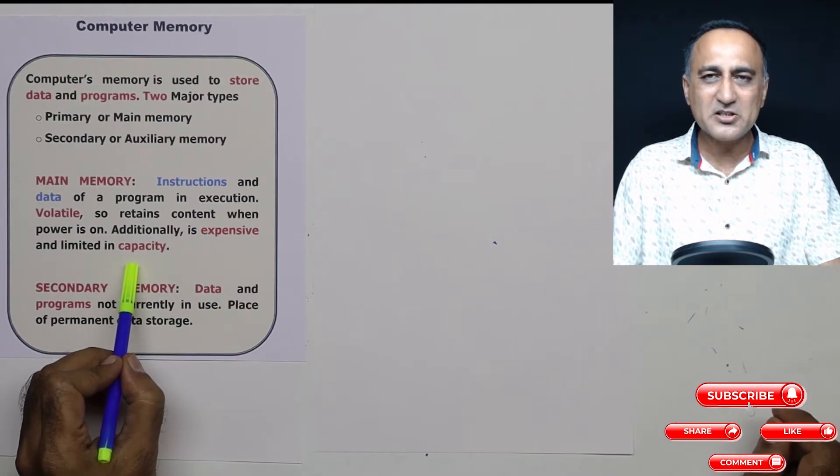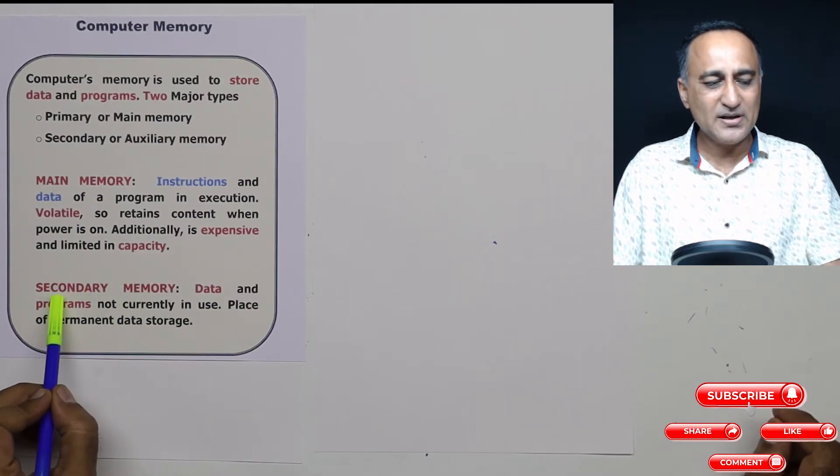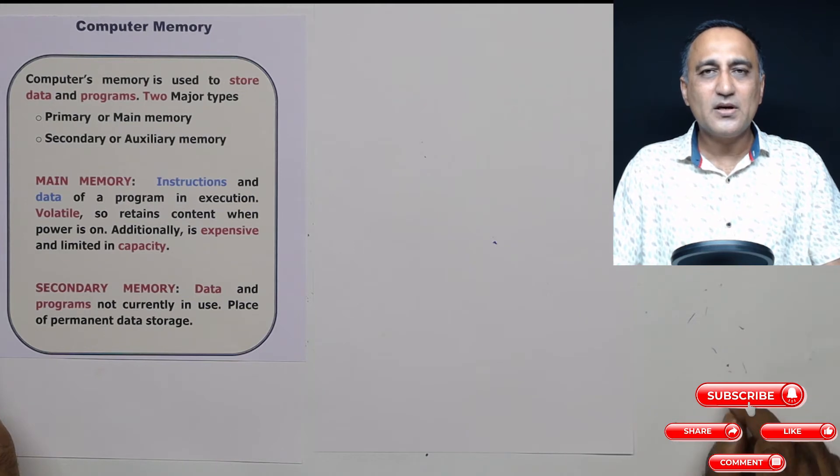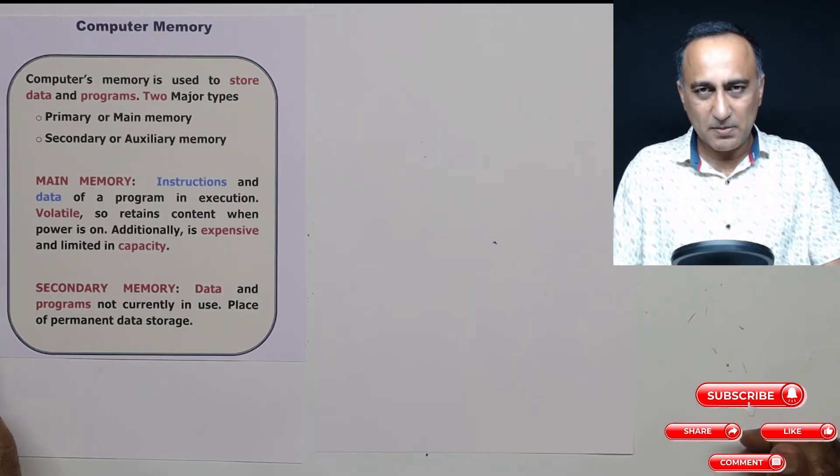And it has a much lower capacity compared to the secondary memory. Now what is secondary memory? Simple way, your hard disk, your DVD drives, your DVDs, your CDs, your pen drives, these are all example of secondary memories.